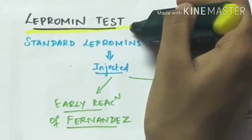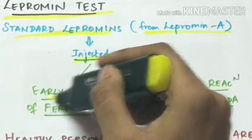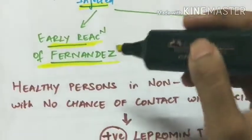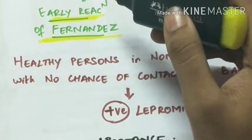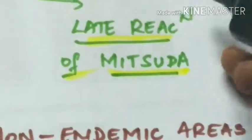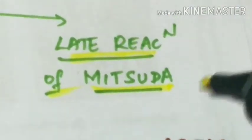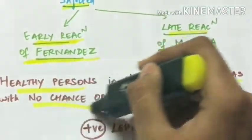Lepromin test: the standard lepromin A is injected, which produces two types of reactions. The early reaction of Fernandez consists of erythema and induration developing in 24–48 hours, remaining for 3–5 days — similar to the tuberculin reaction. The late reaction of Mitsuda starts in 1–2 weeks, reaches peak in 4 weeks, and gradually subsides. It consists of an indurated skin nodule which may ulcerate. Healthy persons in non-endemic areas with no chance of contact with bacillus are positive to the lepromin test.